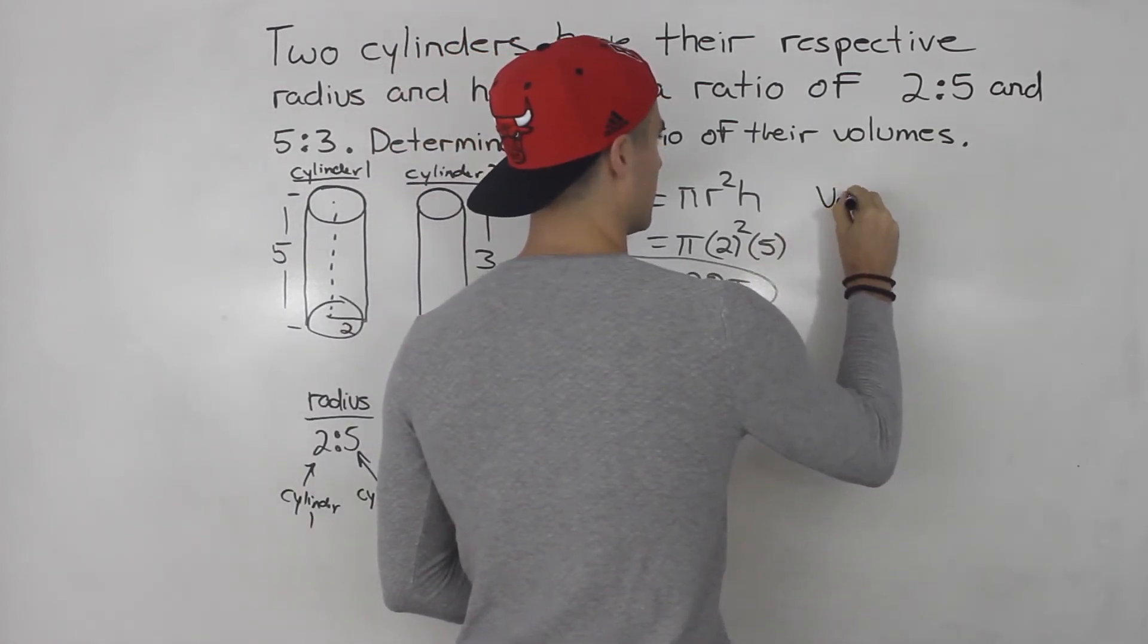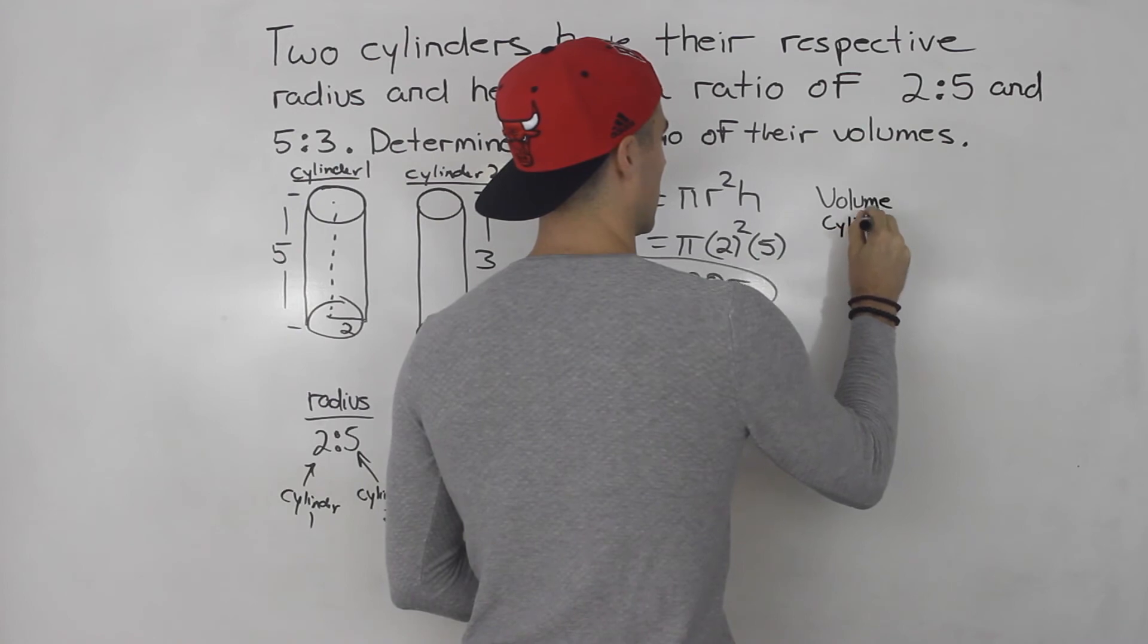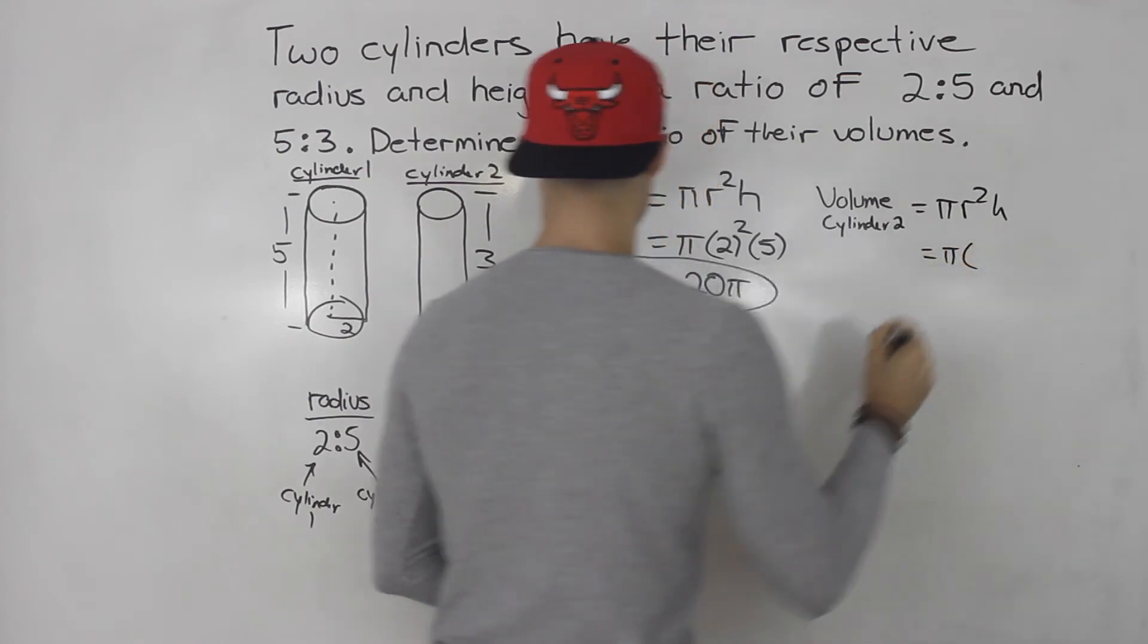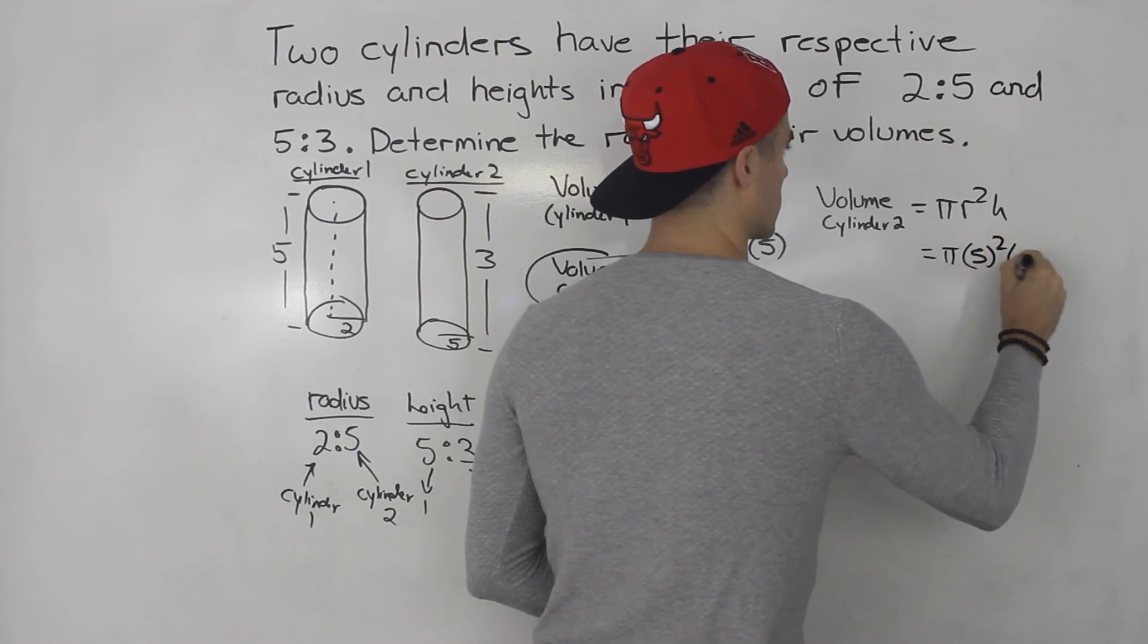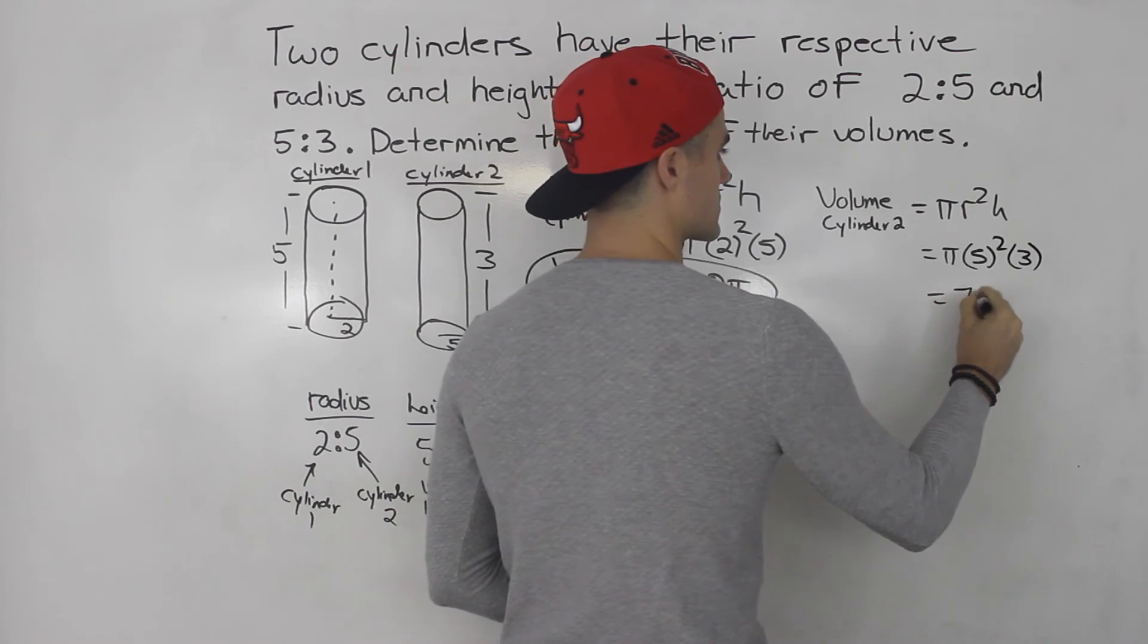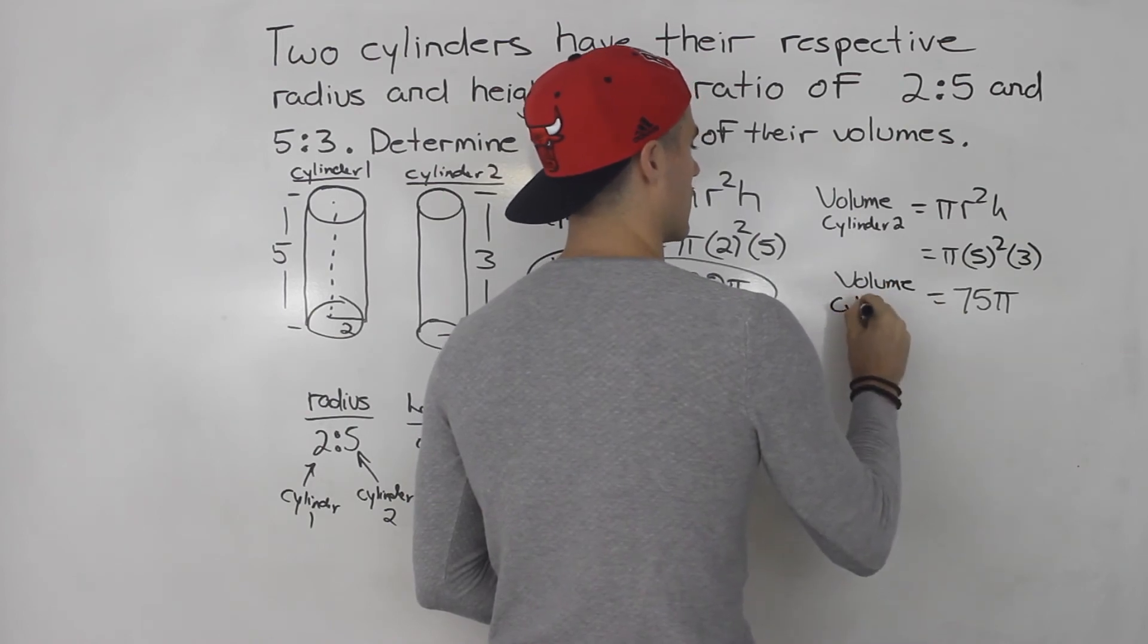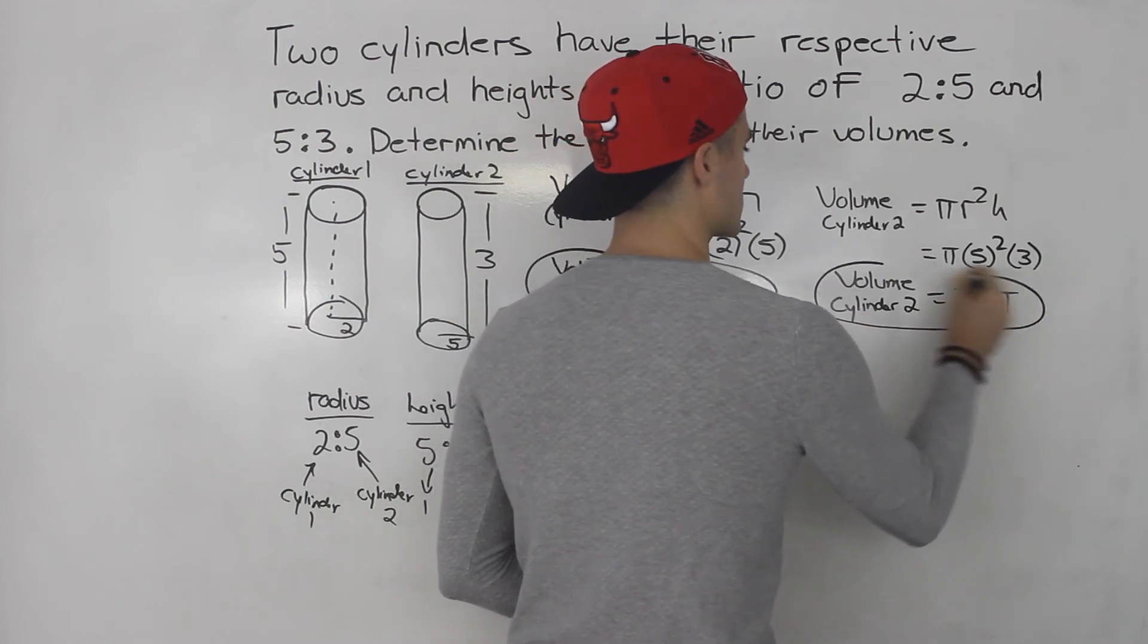Let's do the volume of cylinder 2. So pi r squared h. So pi, radius is 5, that's squared, height is 3. So this is 25 times 3 which is 75. So this is 75 pi. So this is volume of cylinder 2.